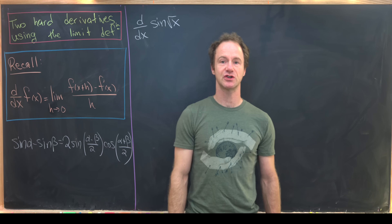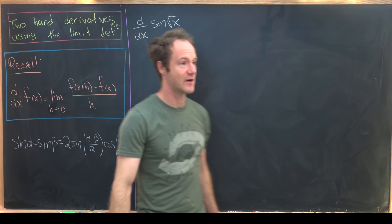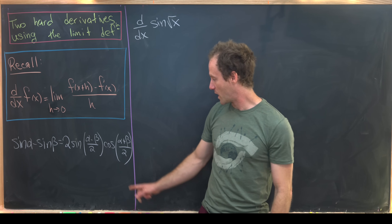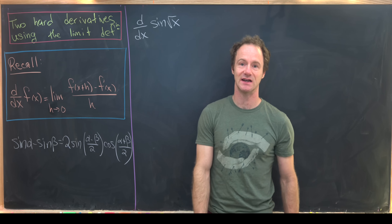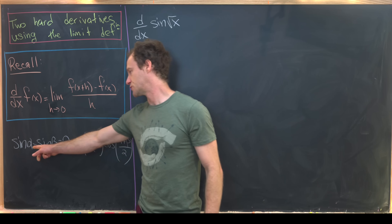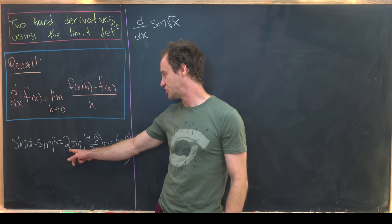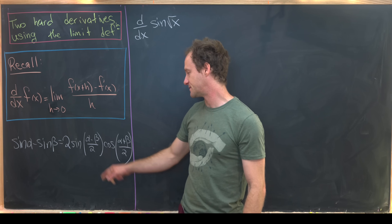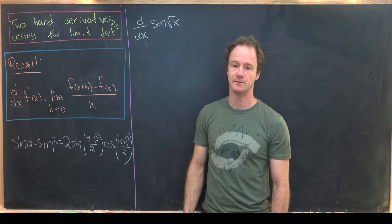The first function we'll look at is sine of the square root of x. Along the way we'll use the following trigonometric identity, which I will not derive: sine(α) minus sine(β) equals two times sine((α−β)/2) times cosine((α+β)/2).